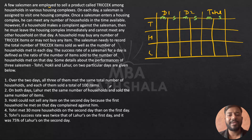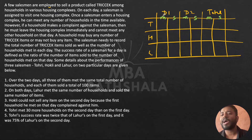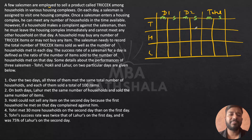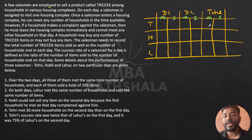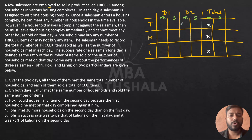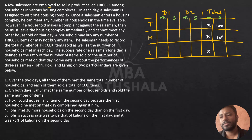Over the two days, all three salesmen — T, H, and L — met the same total number of households, represented as 2x. Also, each of them sold a total of 100 items over the two days. So the 'Total Sold' column for T, H, and L is 100, 100, and 100 respectively.